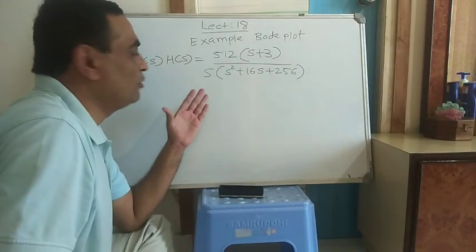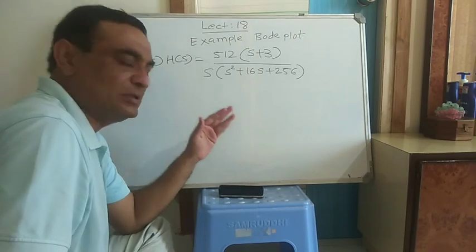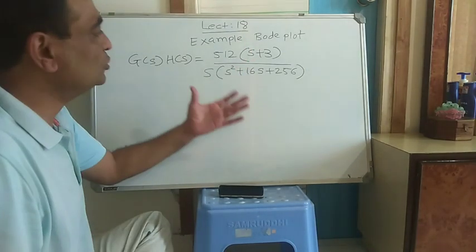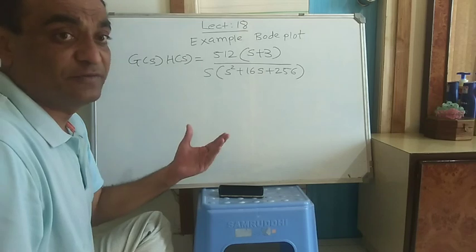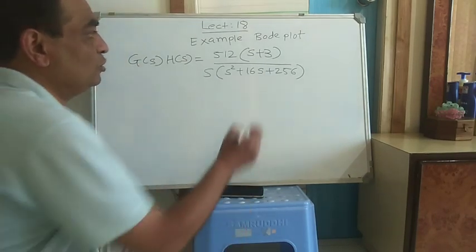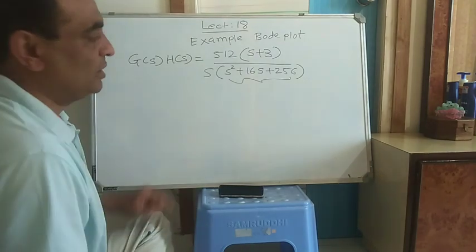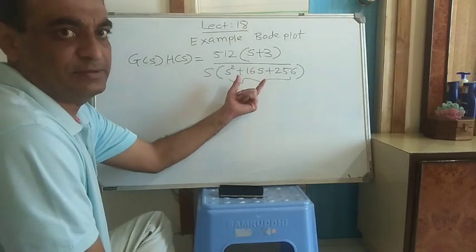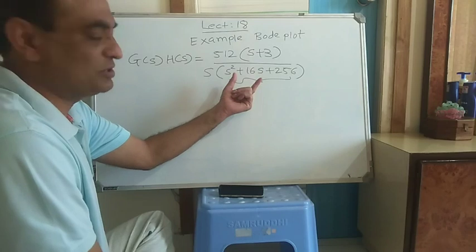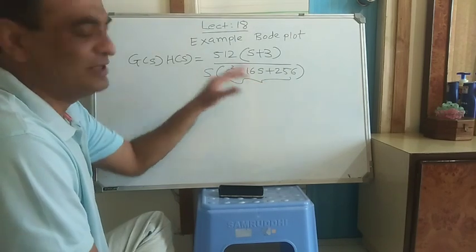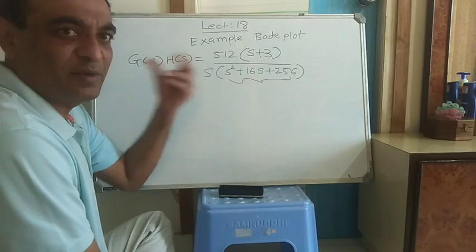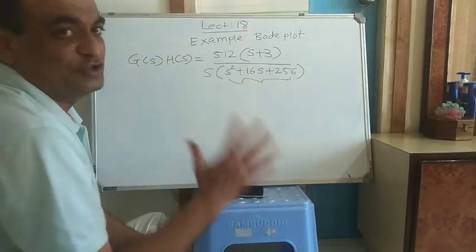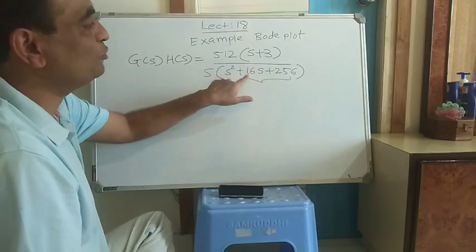If you get an open loop transfer function, don't start constructing the Bode plot straight away. Look into the transfer function carefully — check whether it is in time constant form or not. Also look at the second-order term carefully. You should think: can I find real factors of this second-order term? If you get real roots, then it is no longer a second-order term — it is the combination of two first-order terms. Second-order terms only apply when the roots are complex conjugate.